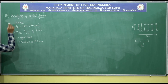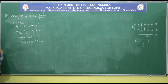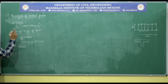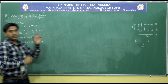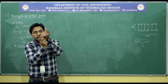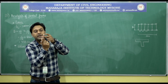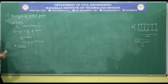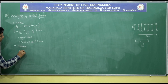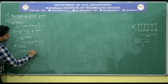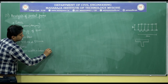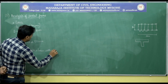Now let me go with the column dimensions. I have assumed beam dimensions: width 300 mm, depth 550 mm. The beam connects to the column, so I will assume the width of the column to be the same as the width of the beam. Column width = beam width = 300 mm.